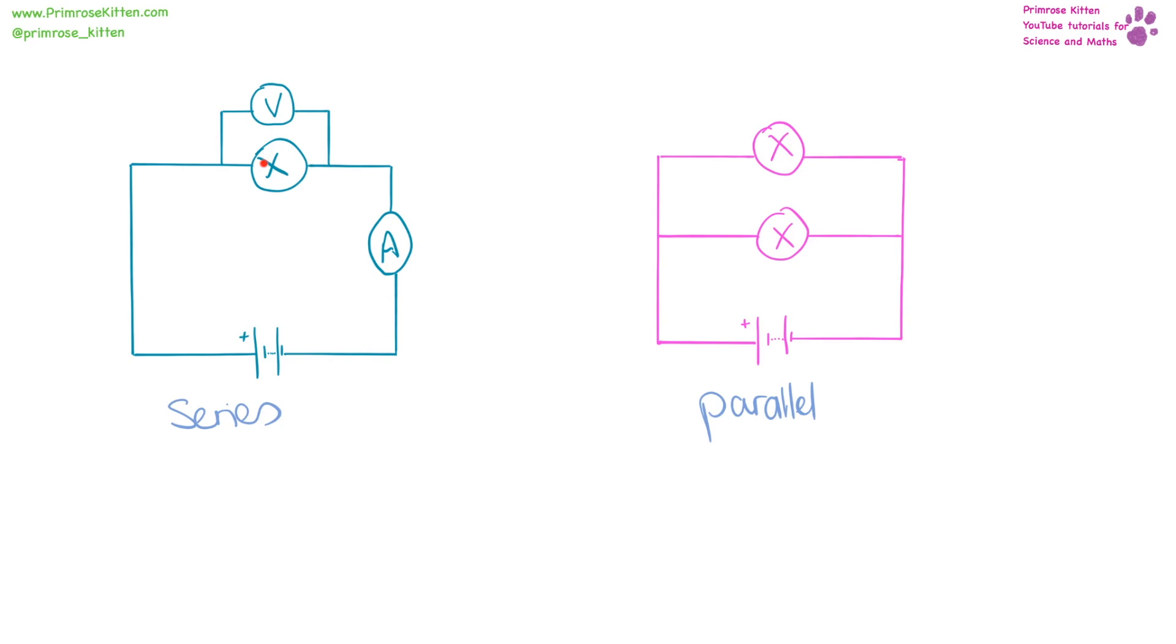Here we have a circuit in series, where you can run your finger the whole way through from the battery to all the components. And here we have a series in parallel, where it has like branches or ladders. You can't run your finger around everything without going over something twice. You'll notice here we have an ammeter that is in series and our voltmeter that has to be in parallel around the component.